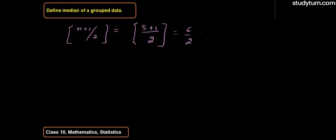will be 6/2. So what do we get? 3. 6/2 is 3. So the median value will be the 3rd observation.